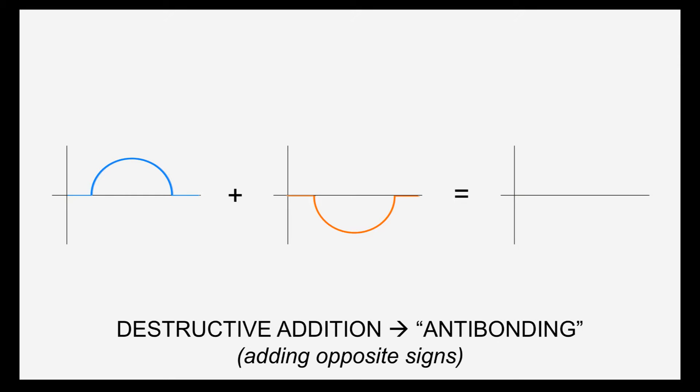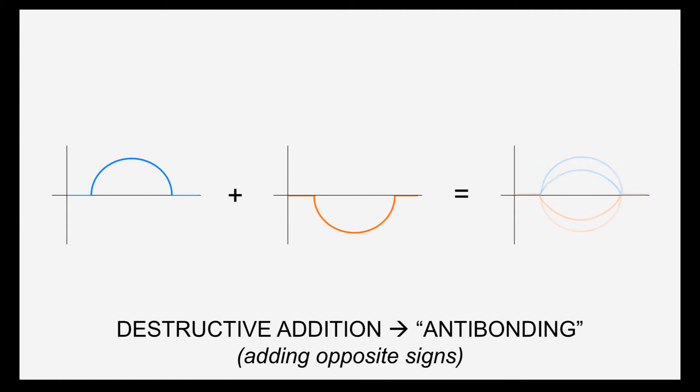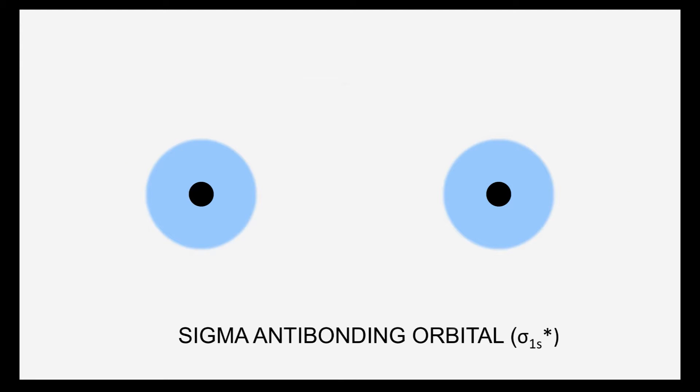Now let's look at these waves. Here the positive piece cancels out the negative piece, and you end up with zero space. We call this a node, and it means that there's zero chance of an electron being there. This is called destructive addition, and this is what it looks like between two s valence orbitals.